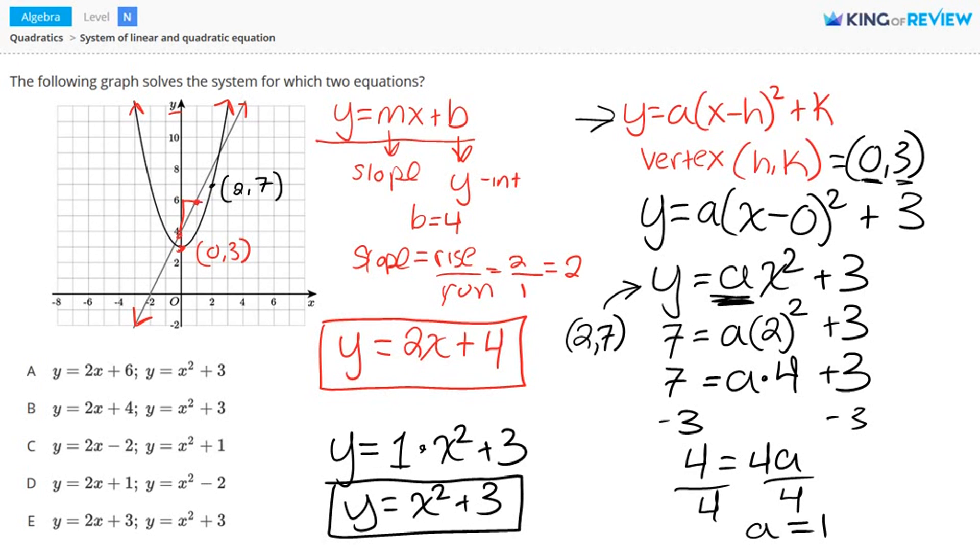So our two equations are y equals 2x plus 4 and y equals x squared plus 3. Letter B is correct. Thanks for watching.